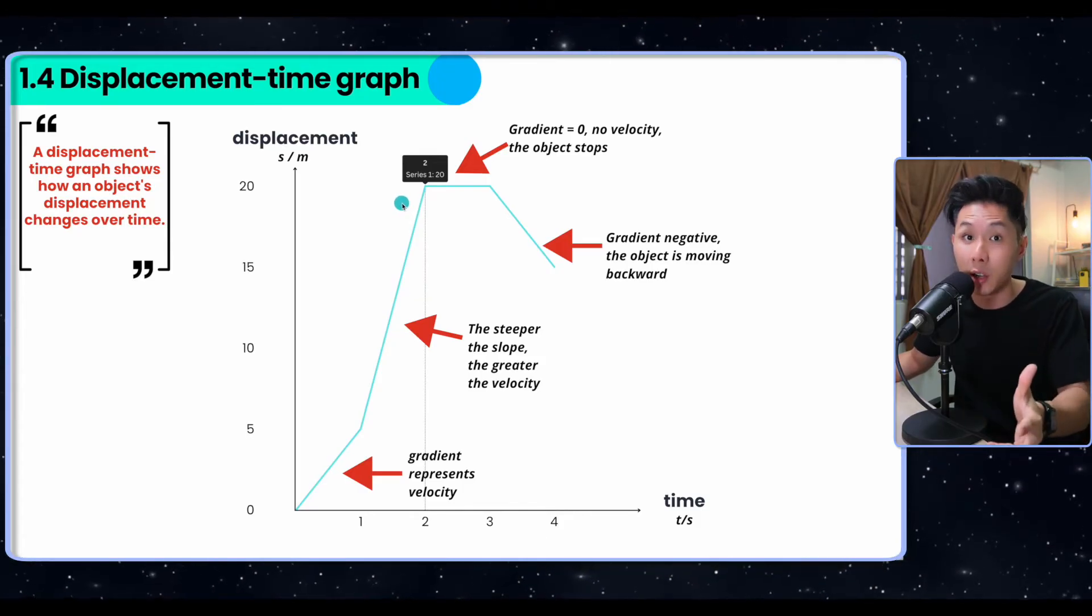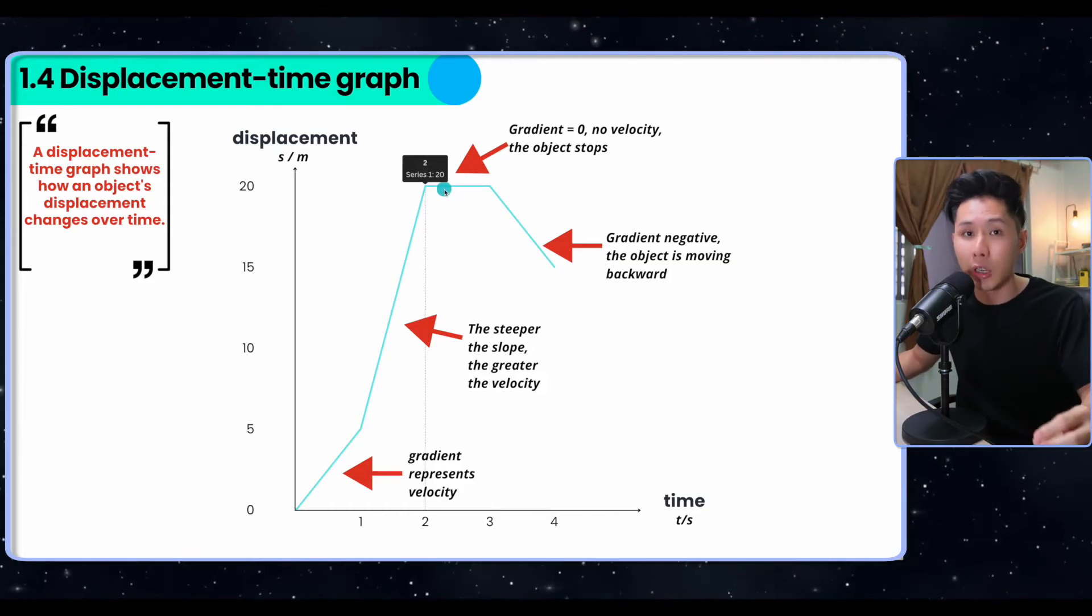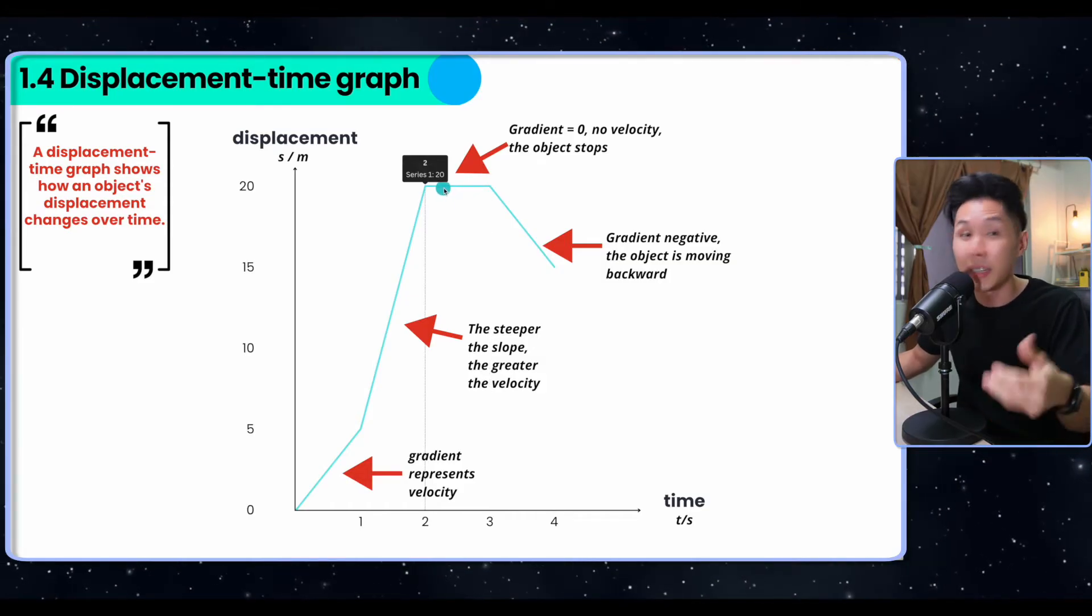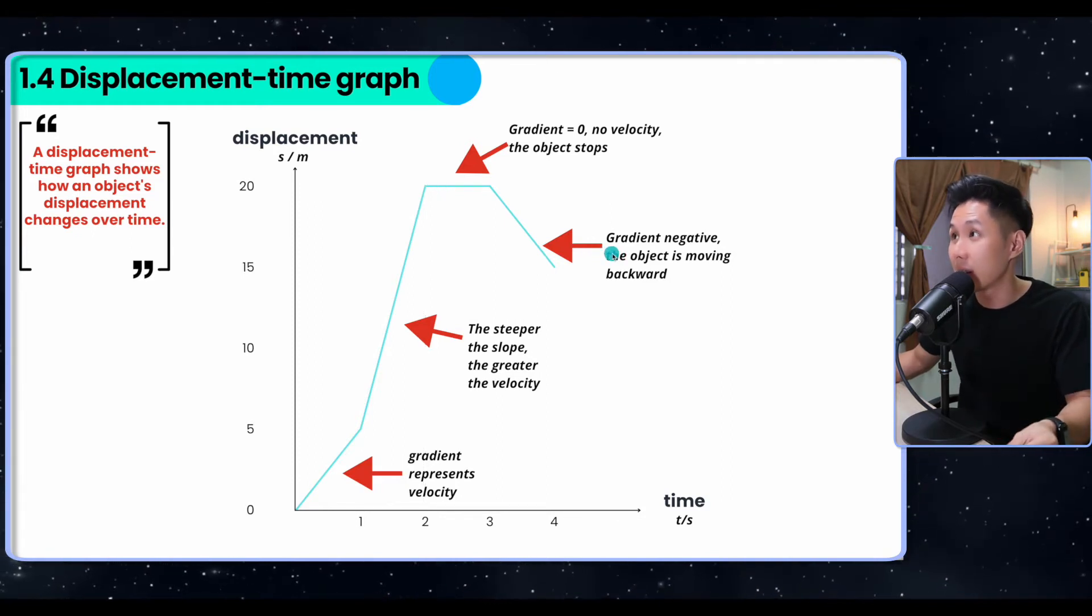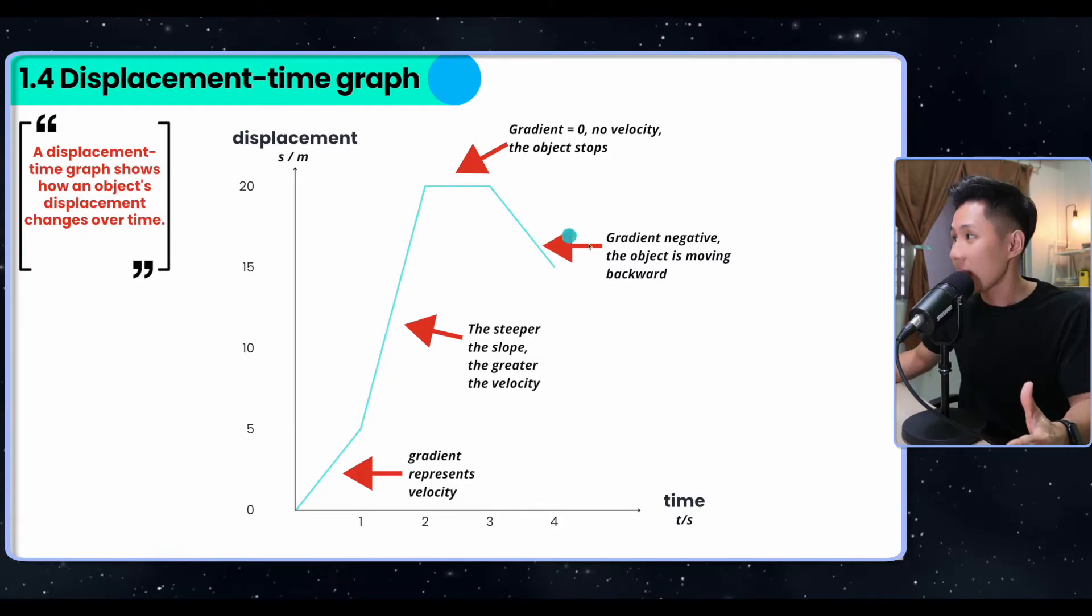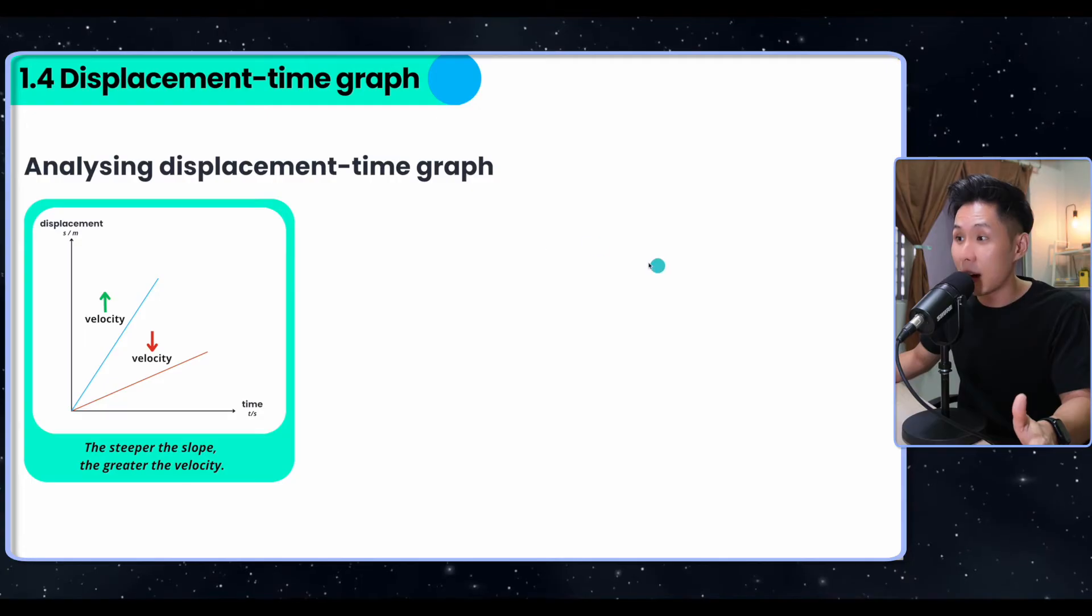What that says is that the object is traveling at a much faster velocity. If the gradient is zero, you can see that the displacement doesn't change. When this is the case, it means that it's not moving, it is stationary. Lastly, if the gradient is negative, it's going back to its original position and that states that the object is moving backwards.